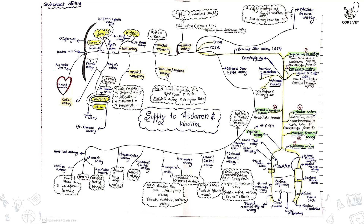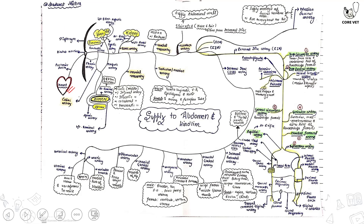First of all, the posterior aorta or the abdominal aorta passes backward from the heart and crosses the hiatus aorticus, crossing the thoracic region and coming into the abdomen region. When it crosses the hiatus aorticus, it will continue as the abdominal artery.